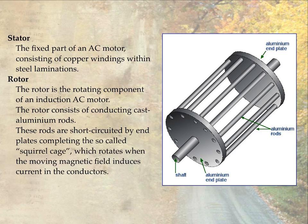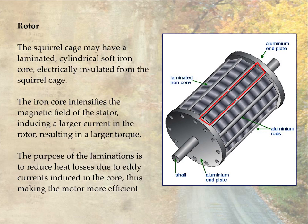The squirrel cage is made of aluminium and is free to rotate. To increase efficiency, a laminated iron core is inserted inside, which strengthens the magnetic field lines through each of the bars, increasing the eddy currents and therefore the forces on the cage. The lamination is important because it reduces unwanted eddy currents within the core itself.